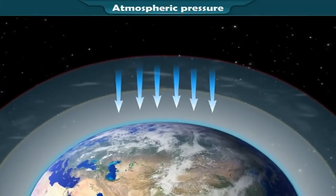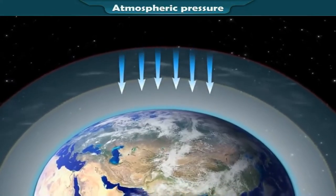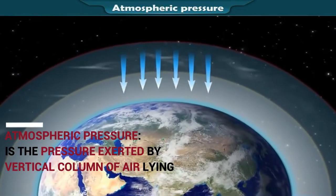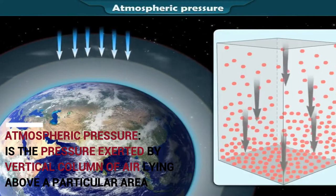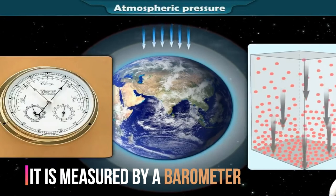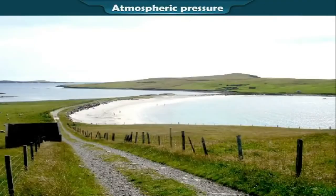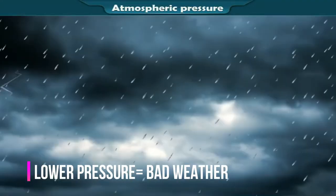Atmospheric pressure: air is a highly compressible mixture of gases which applies pressure on Earth's surface by exerting its weight. Atmospheric pressure is defined as the pressure exerted by the vertical column of air lying above a particular area. It is measured using a barometer. The variation of atmospheric pressure from one place to another affects all the weather changes. For example, rising pressure makes the weather fine while decreasing pressure makes the weather cloudy and rainy.